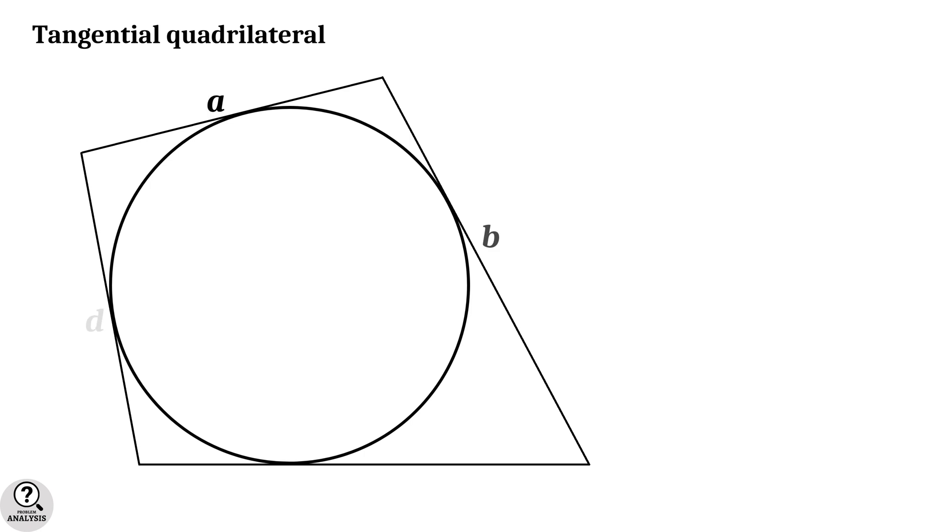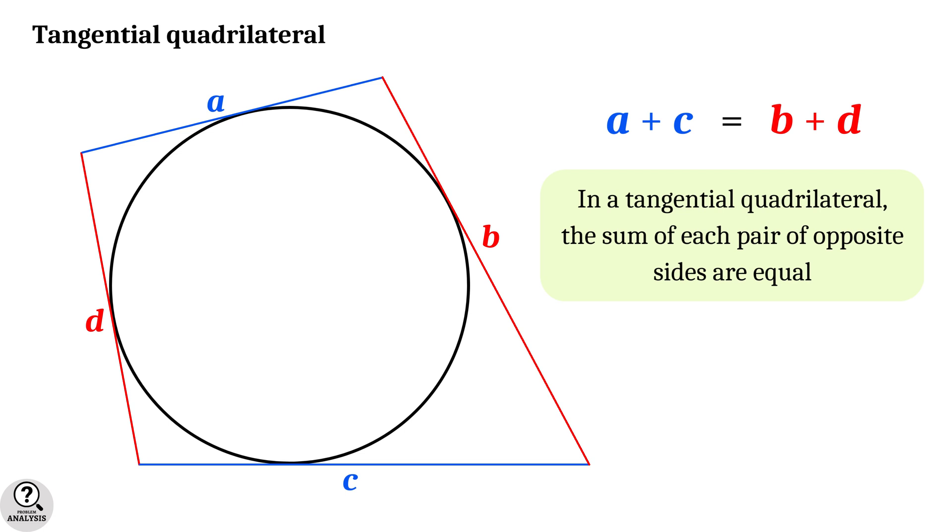Suppose the side lengths are given as A, B, C and D units. Then the fact is the sum A plus C is equal to the sum B plus D. That is, in a tangential quadrilateral, the sum of each pair of opposite sides are equal.